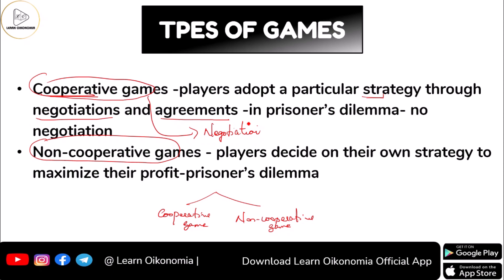Moving on to the non-cooperative game — here every player considers the other player as an opponent and tries to maximize his own payoff. Each player takes a strategy that will maximize their own profit. In the prisoner's dilemma, every suspect was trying to minimize his years of imprisonment, maximizing his own payoff. So the prisoner's dilemma is a perfect example of a non-cooperative game.